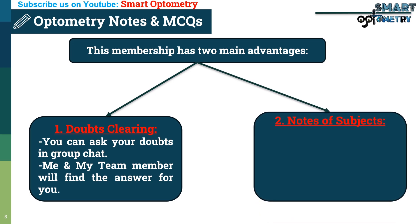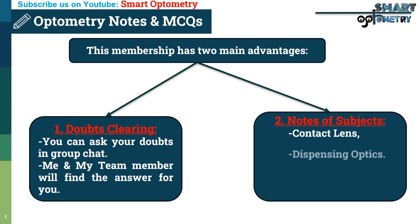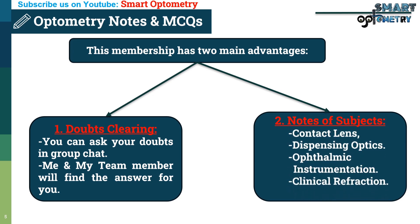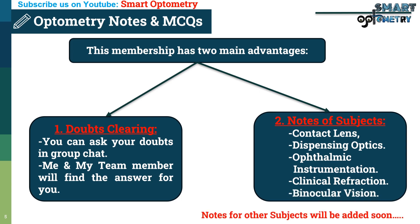The second advantage is notes for five subjects. You will get notes for contact lens, dispensing optics, ophthalmic instrumentation, clinical refraction, and binocular vision. Notes for other subjects will be added soon.